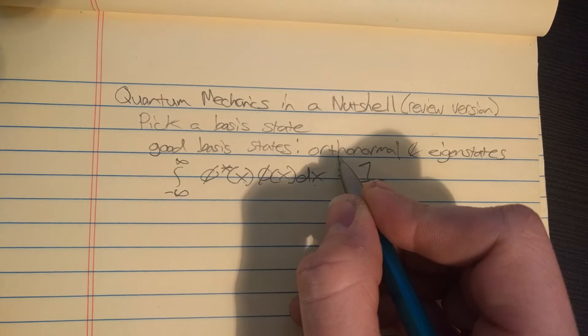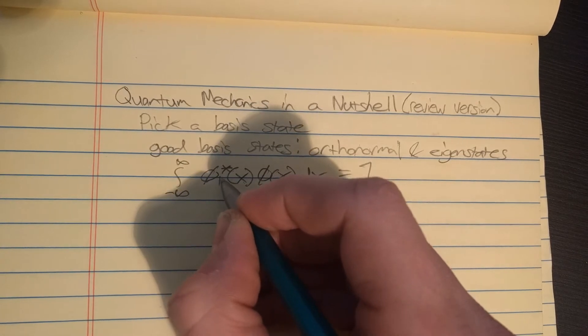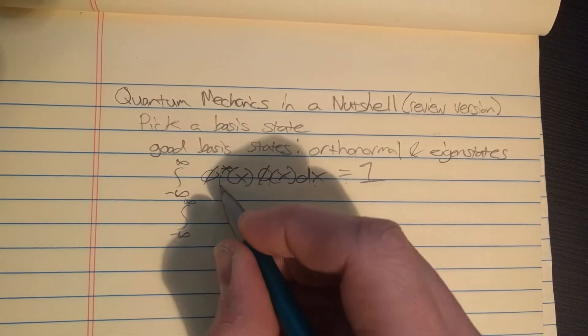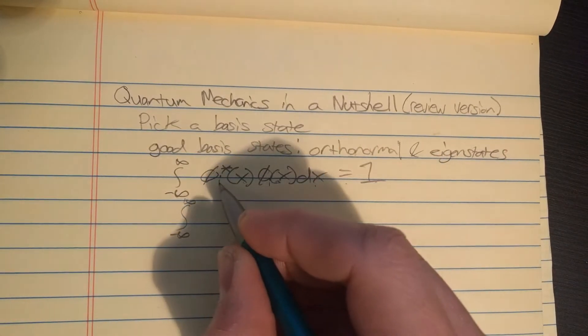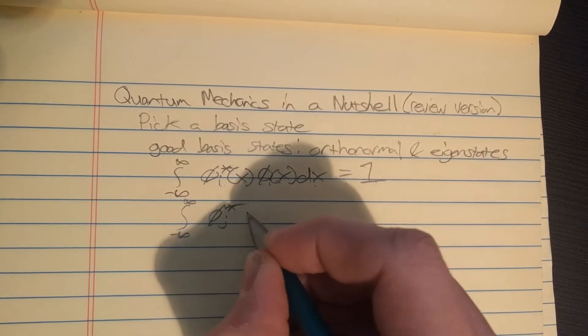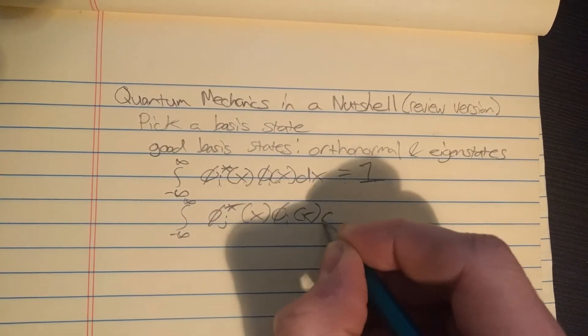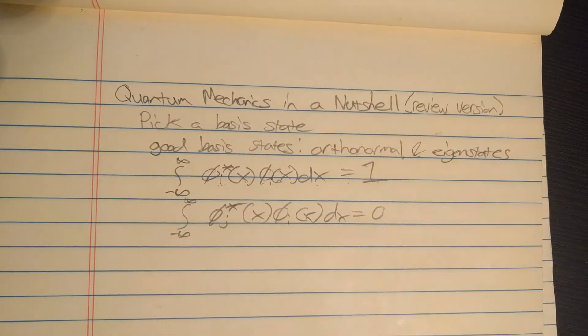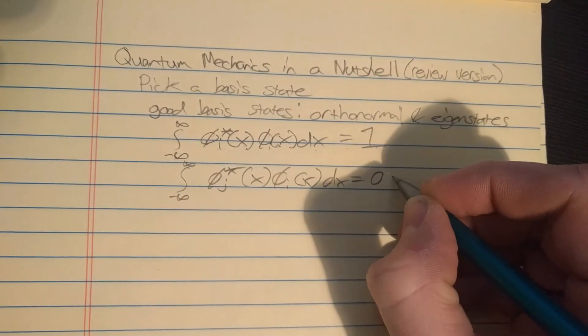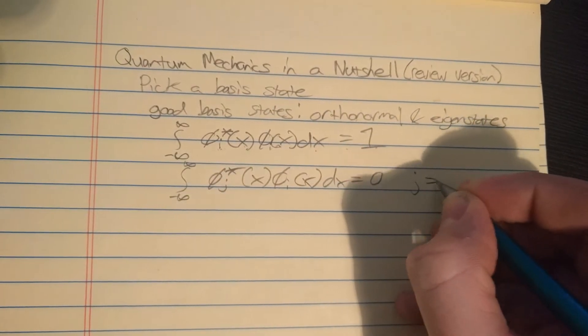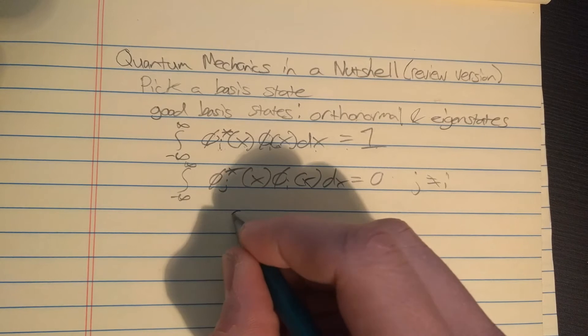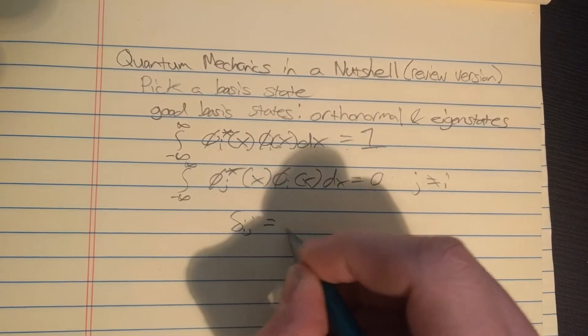The ortho part of it requires that, let's call this phi sub i. If you try to do this with another - if i is one this will be one, but if this first i is different than the second one, let's call it j, then this should give you zero.